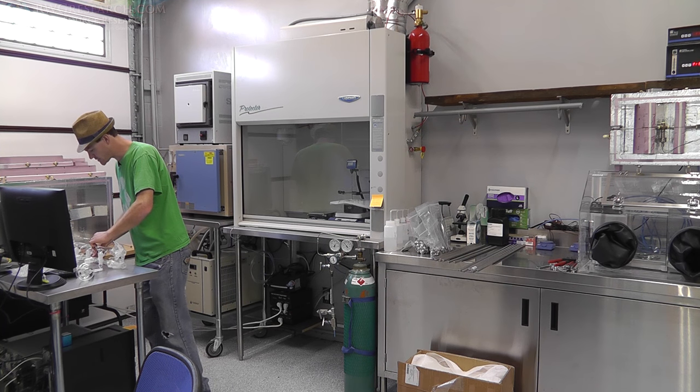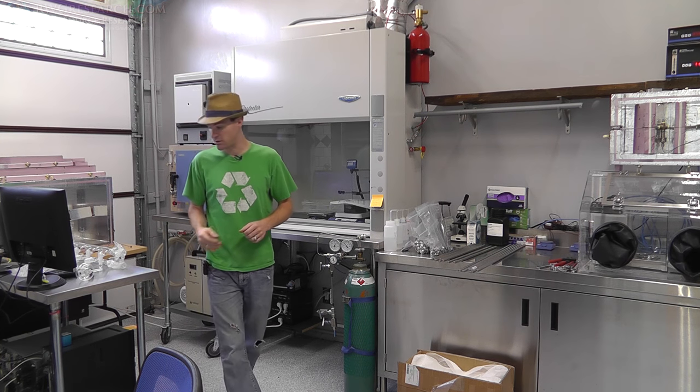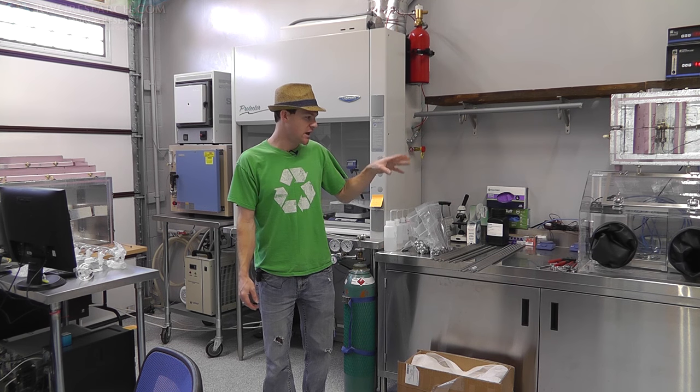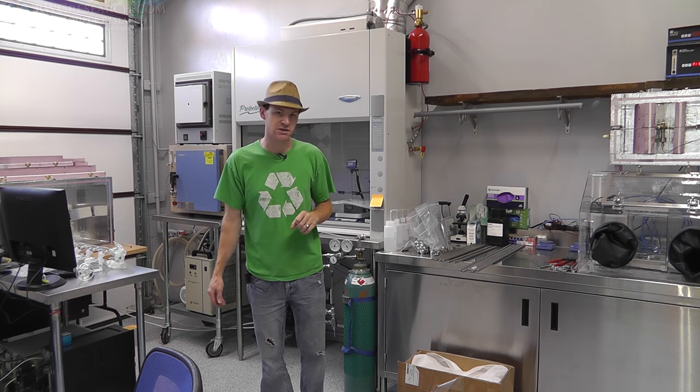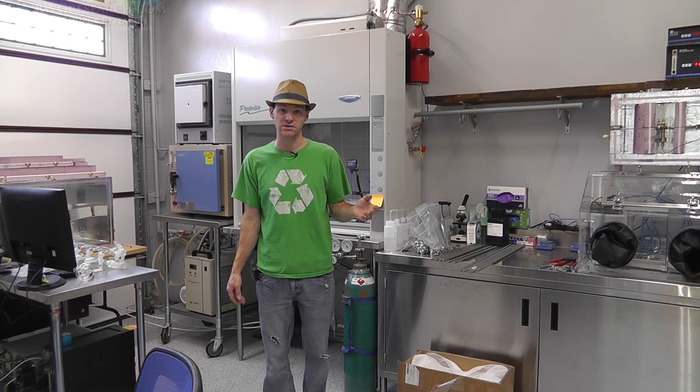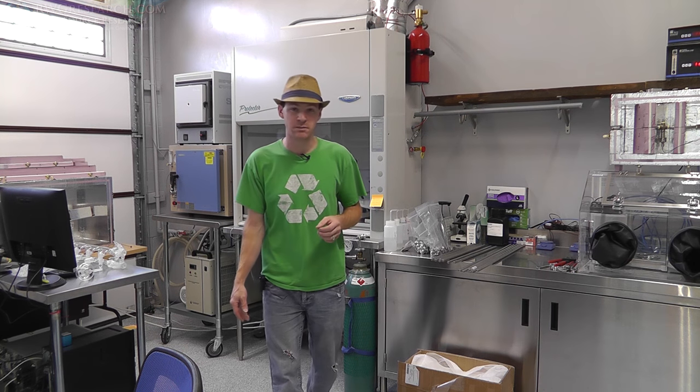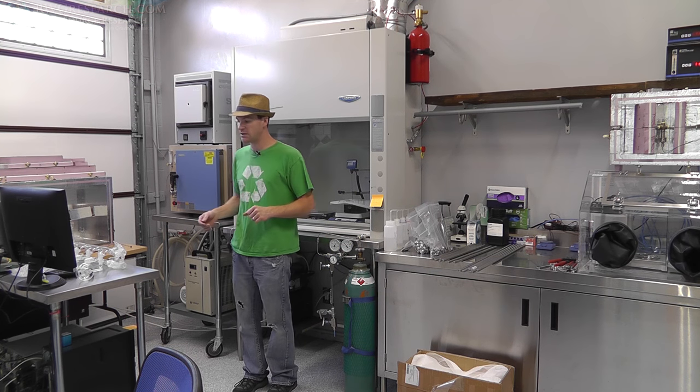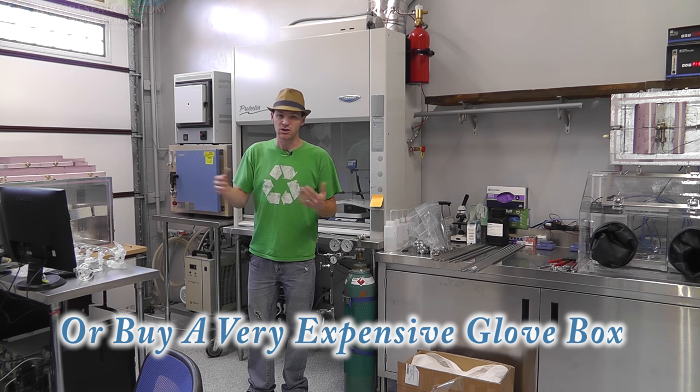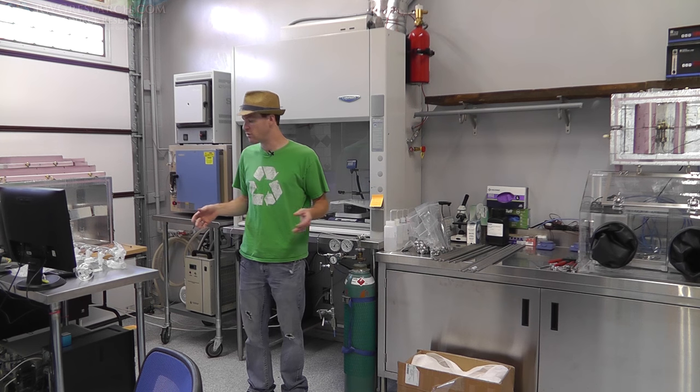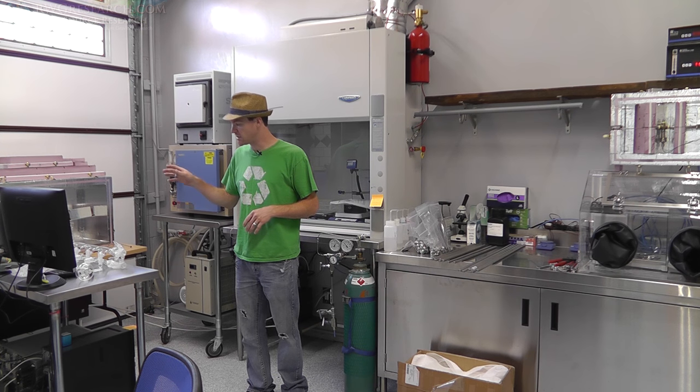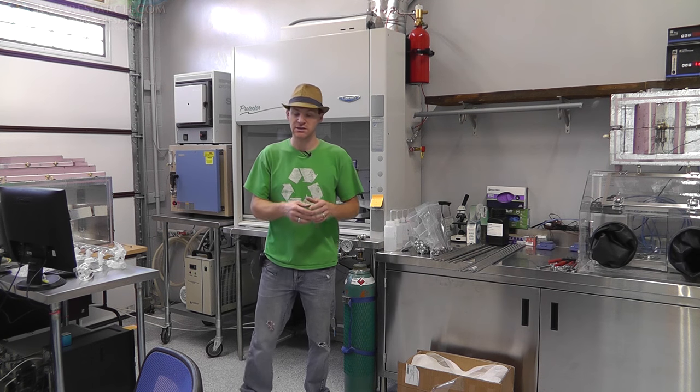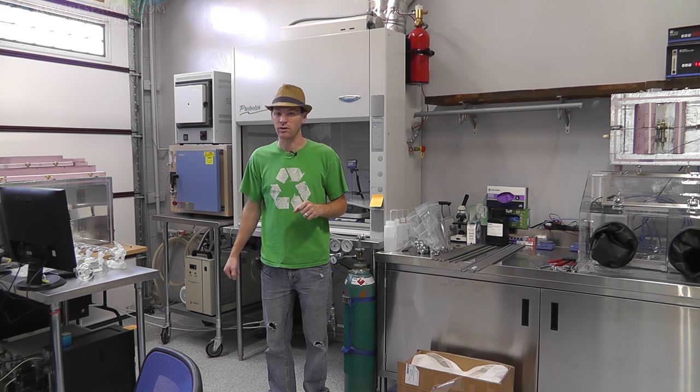I briefly want to run you through a few things that we've tried around here and then the reason we're going to a Schlenk line. We have this glove box you see right here. This glove box is not the best glove box for super high inert conditions and really clean atmospheres as far as low oxygen content. We want to be way down into the PPM range. So, the only way to really get around that is to build a Schlenk line.